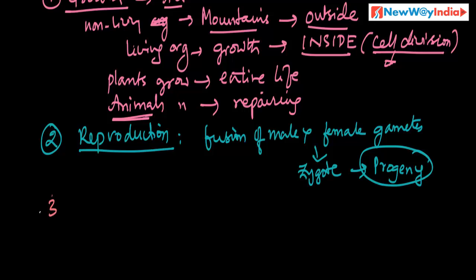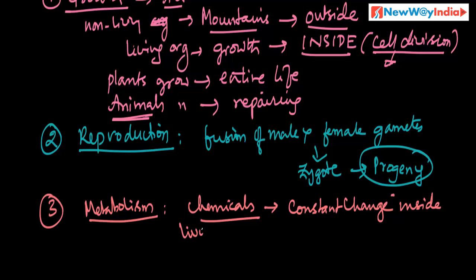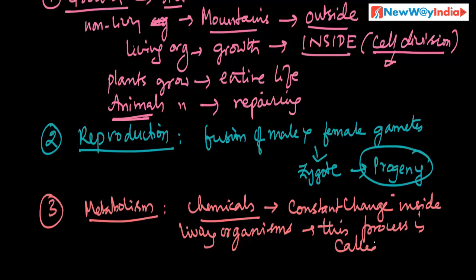The third one is metabolism. All living organisms are made up of chemicals. These chemicals undergo constant changes inside the body of living organisms. The process of these constant changes is called metabolism. These chemicals constantly undergoing some change inside the body of living organisms is what we call metabolism.